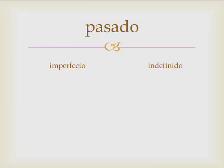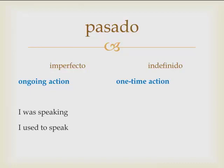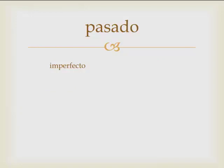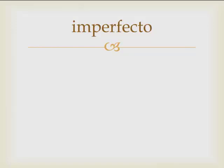The focus of this lesson will be the imperfecto. What's the difference between these two verb tenses? The imperfecto is an ongoing action, as opposed to the indefinido, which is a one-time action. For example, the verb hablar in the imperfecto would translate as 'I was speaking' or 'I used to speak,' whereas hablar in the indefinido would translate as 'I spoke.' An ongoing or repeated action in the past versus a one-time action — that's the main difference.